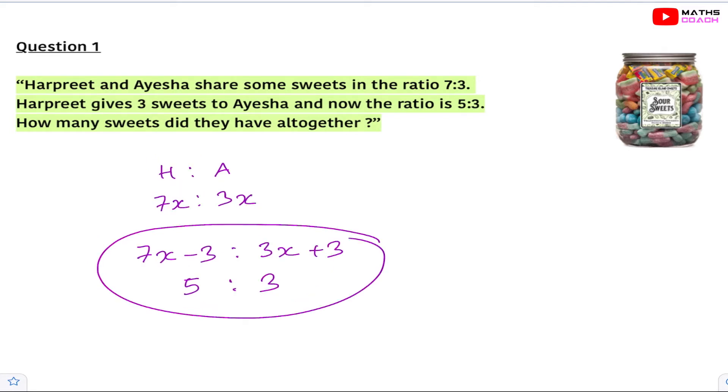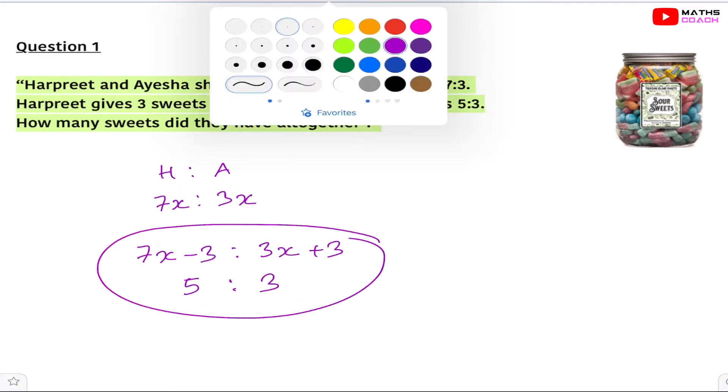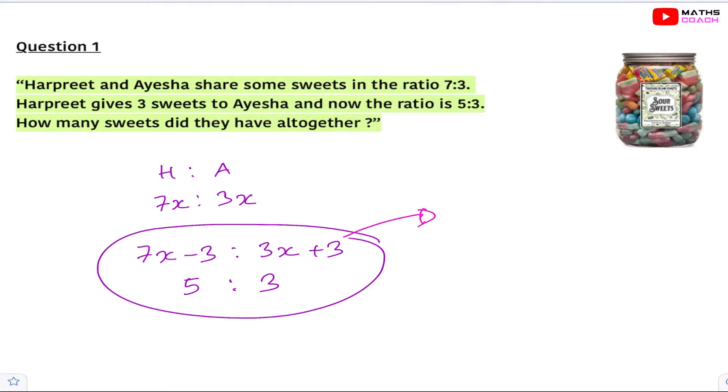We are going to turn this into equivalent fractions. So what I mean by this is we can do 7x minus 3 divided by 3x plus 3, and this is equivalent to 5 divided by 3. Now that we have the algebraic fractions here we will just solve this.